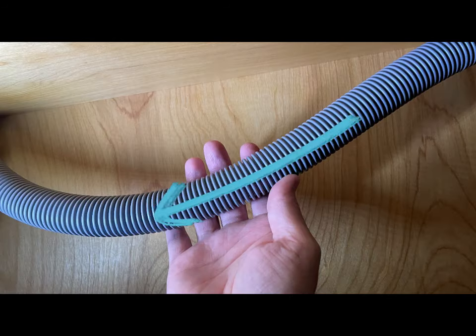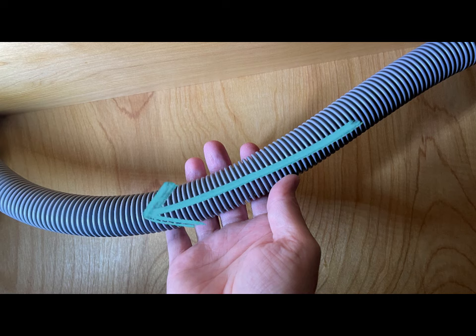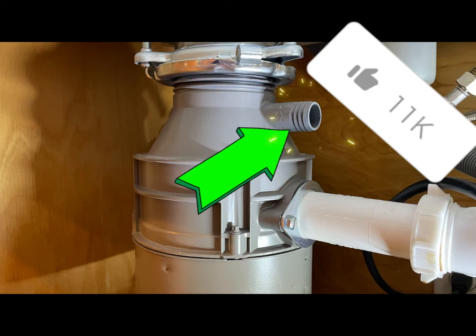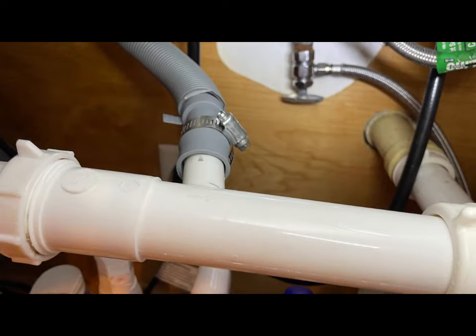This could cause odors or even allow wastewater from the sink to enter into the dishwasher. These drain hoses are usually installed to drain directly into the garbage disposal or sink plumbing. If installed into the under sink plumbing,